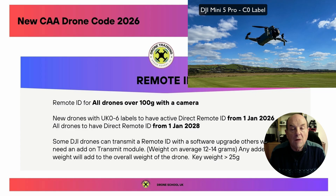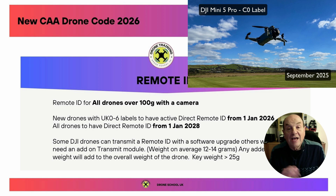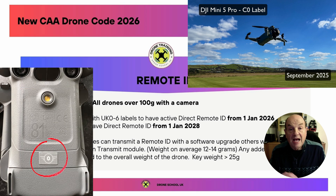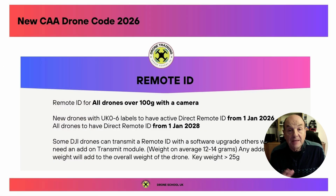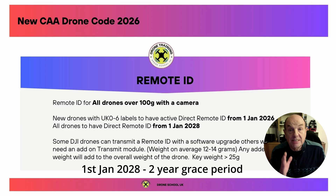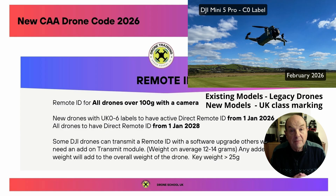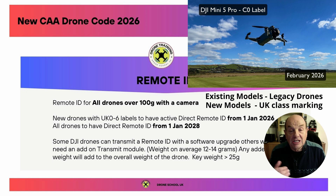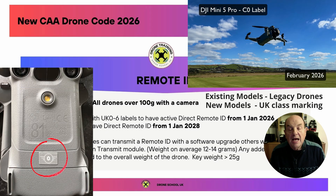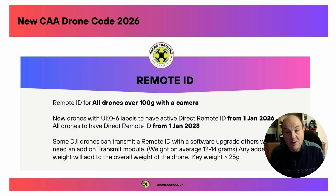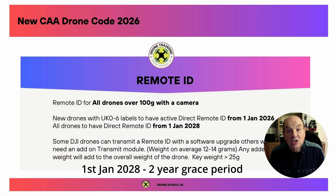To give a couple of examples: if I bought my Mini 5 Pro in September 2025, it has a C0 label and will not need any form of remote ID until January 1st 2028. If I go out and buy a new Mini 5 Pro or a Neo 2 in February or March 2026, it's a legacy model — not a new model — so it will come with a C0 label and will also not require any form of remote ID until January 1st 2028.